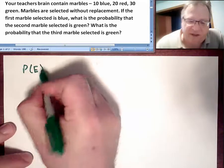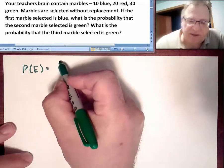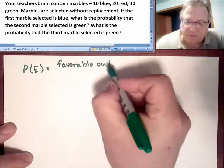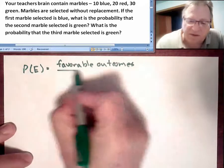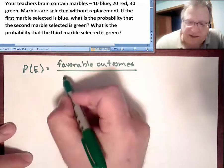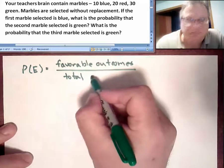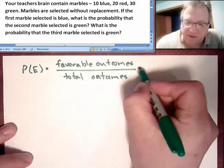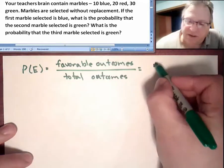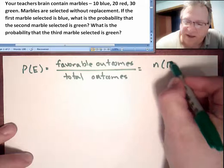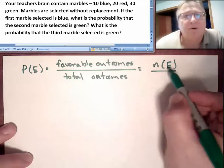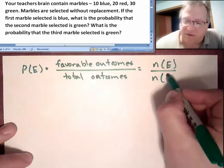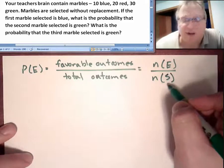The probability of an event is equal to the number of favorable outcomes divided by the total number of outcomes. We often abbreviate this using this terminology: n(E), which means the number of favorable outcomes, over n(S), the number of outcomes possible in the entire sample space.